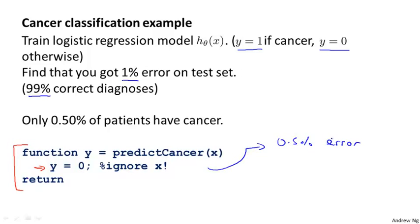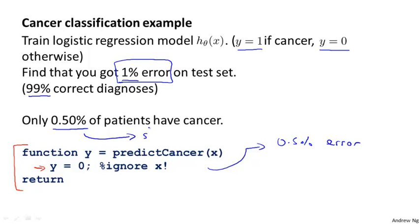That algorithm would actually get 0.5% error, which is even better than the 1% error we were getting, and it's a non-learning algorithm that just predicts y equals 0 all the time. This setting — where the ratio of positive to negative examples is very close to one of the two extremes, and in this case the number of positive examples is much smaller than the number of negative examples because y equals 1 so rarely — is what we call skewed classes.